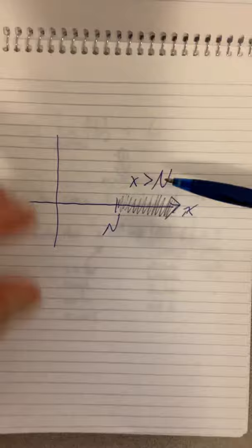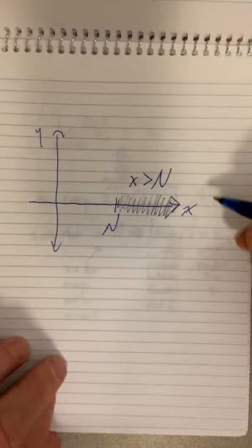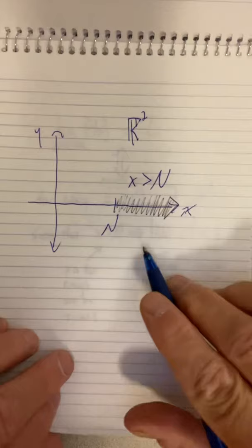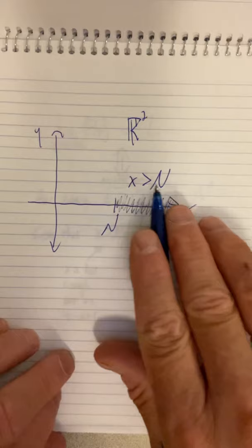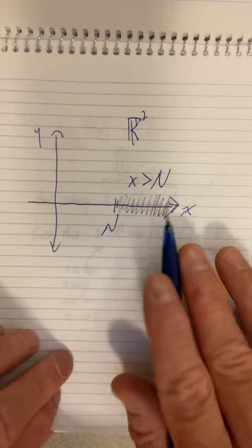Then we saw x greater than N. Well, here's an x-axis in a Cartesian plane. So we have our Cartesian plane, our vector space, R2 vector space. But on the x-axis, there's some point N, and when x greater than N just means beyond that. It means we're far enough out on the x-axis for something to happen.